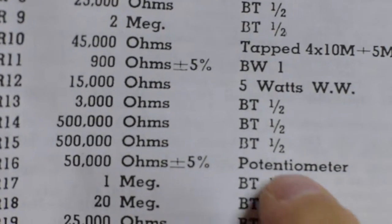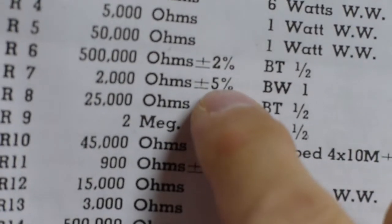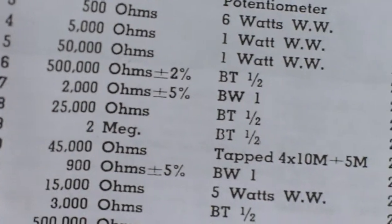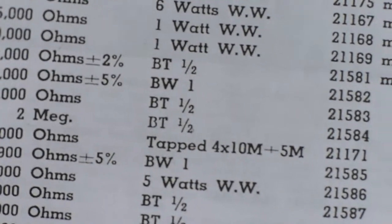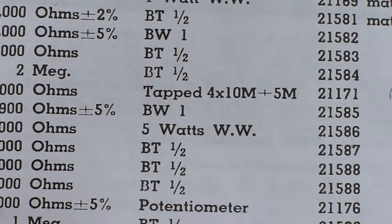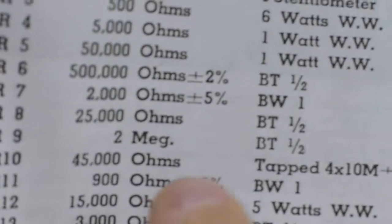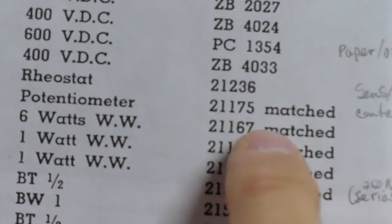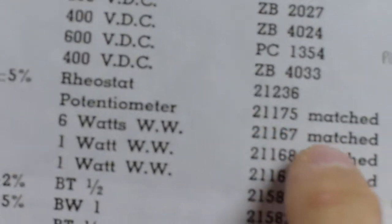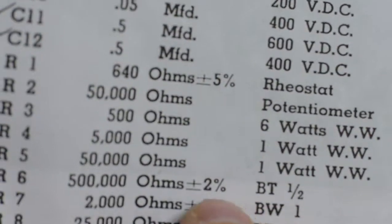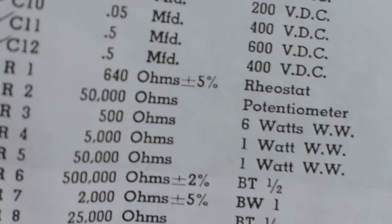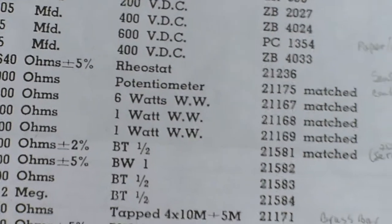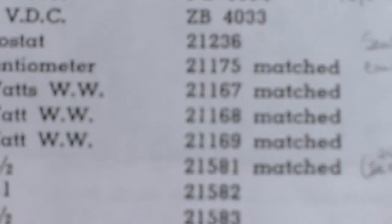Those are the ones that are labeled here, here, here, and here. The plus or minus 5s, that's not a problem. The plus or minus 2. Now we'll see something over here that's interesting - matched, matched, matched, matched. These are matched resistors. And I spent quite a bit of time trying to figure out what they were matched to, because their values...